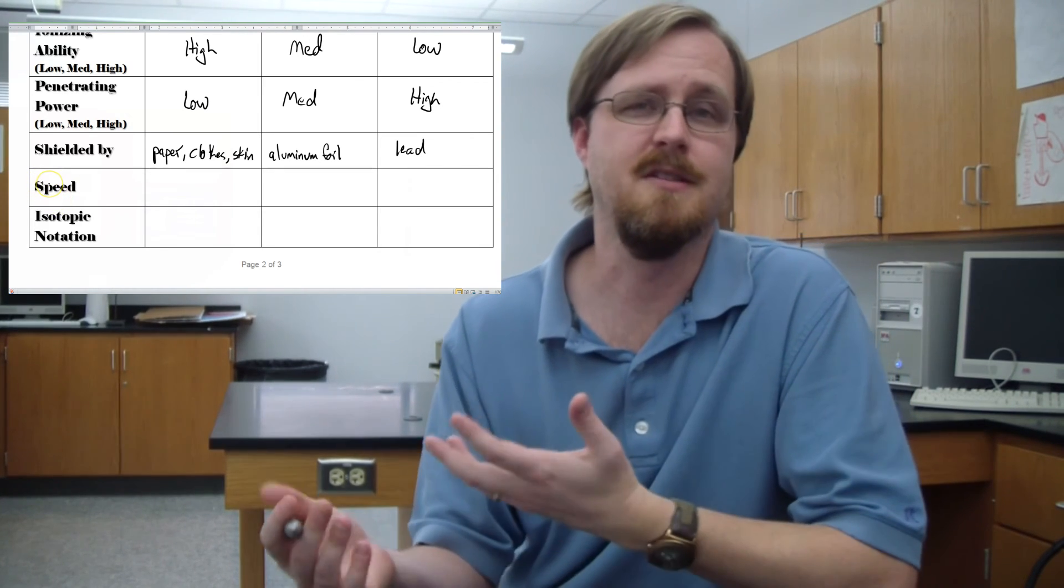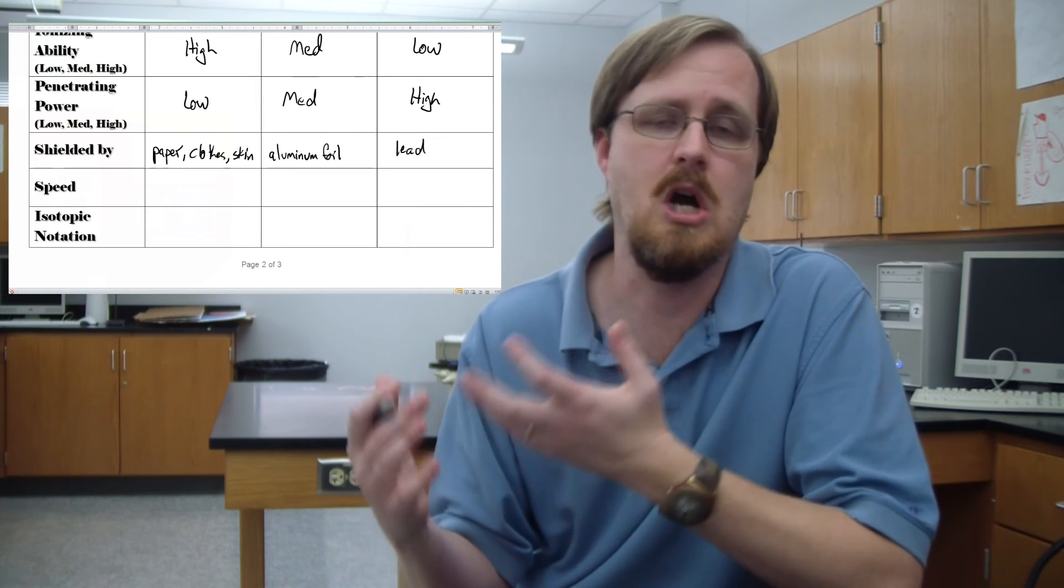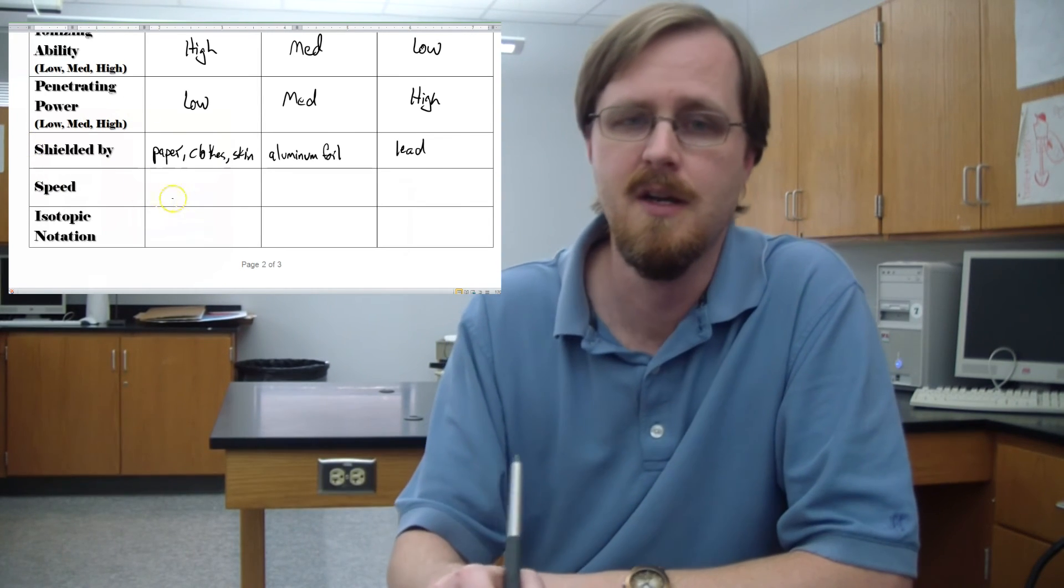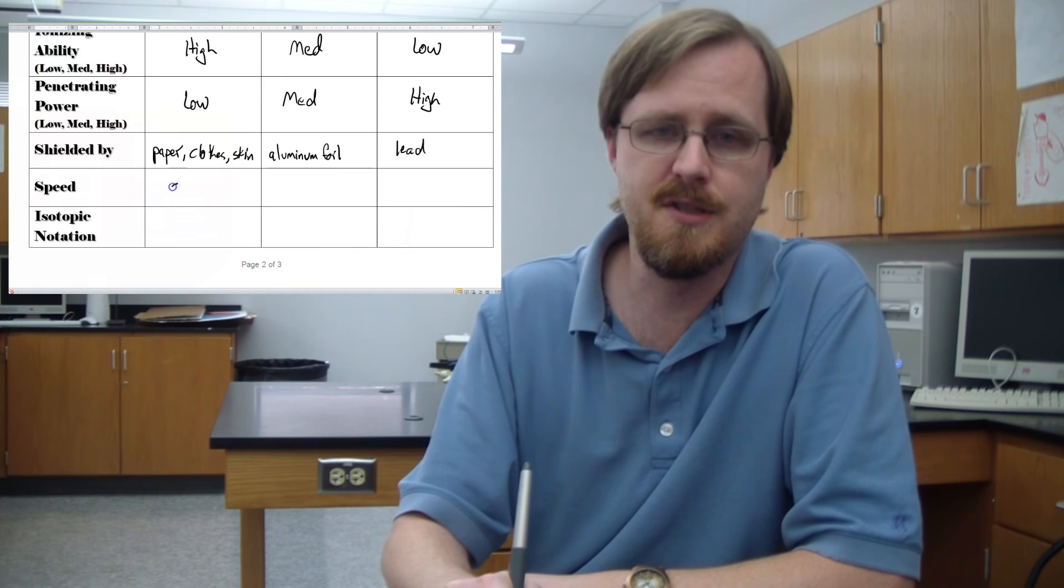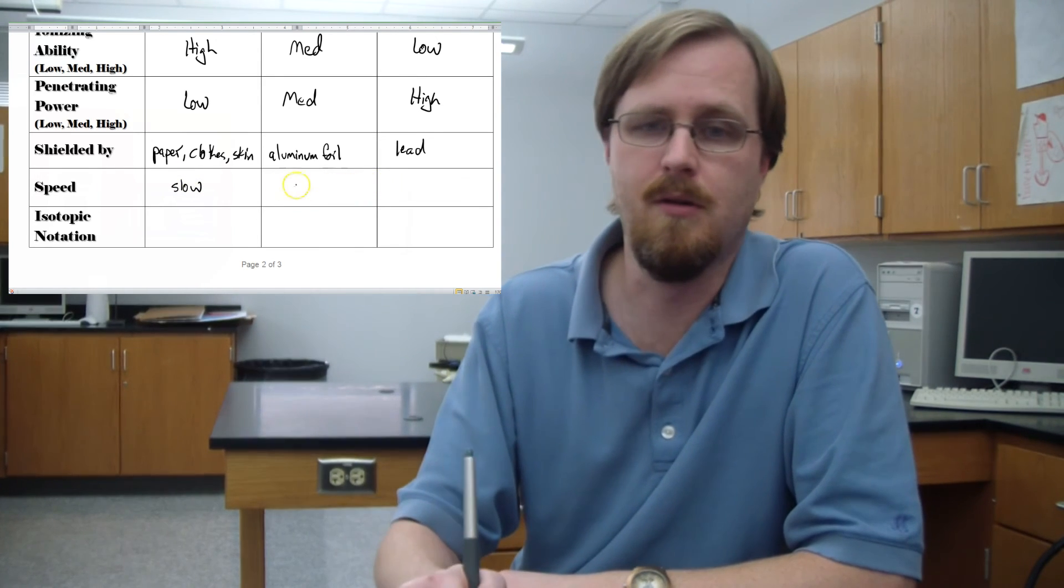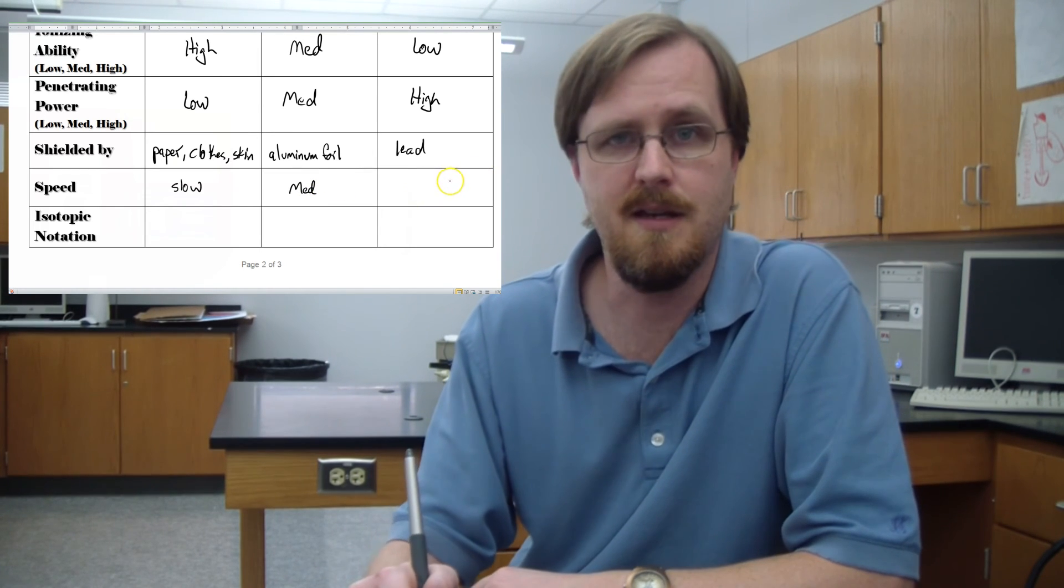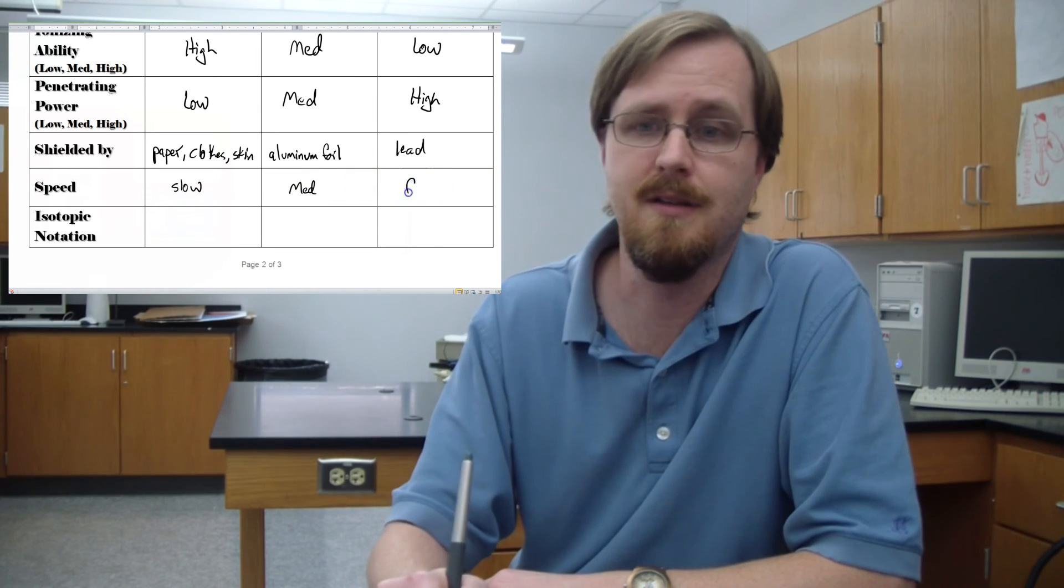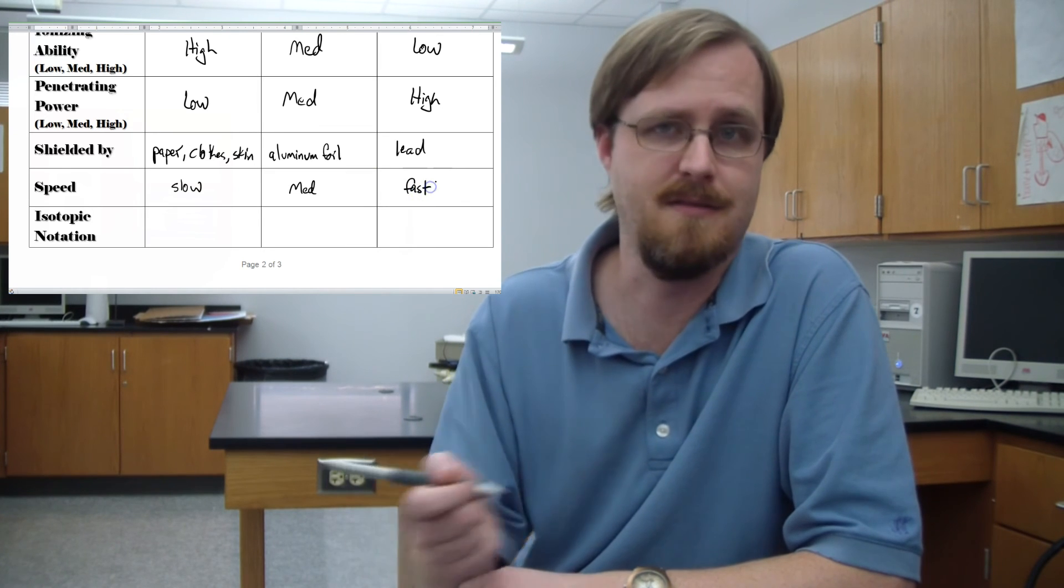The speed. Now obviously this is relative speed here. We're not talking actual values here. The alpha particle being the largest is going to be slow. The beta particle, once again being in the middle, is medium. And then the gamma radiation is quite fast, right? Because it's not even a particle.